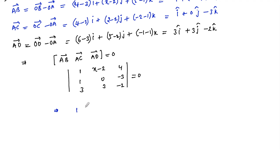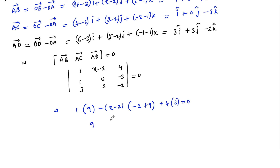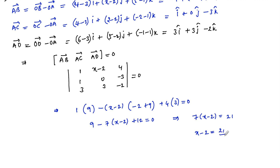Expanding: 1 times (0·(-2) - (-3)·3) minus (x-2) times (1·(-2) - (-3)·3) + 4 times (1·3 - 0·3) = 0, which gives 9 - 7(x-2) + 12 = 0, or 7(x-2) = 21, so x - 2 = 3, therefore x = 5.